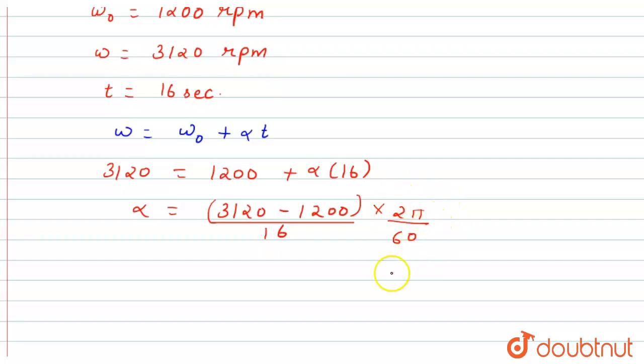Now when I subtract this one, I get an answer that is 1920 times 2π divided by 16 times 60.